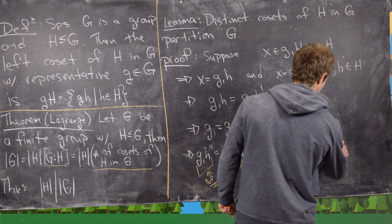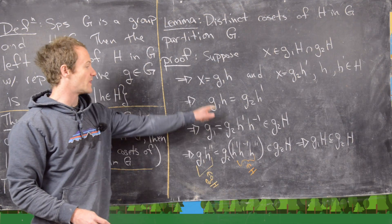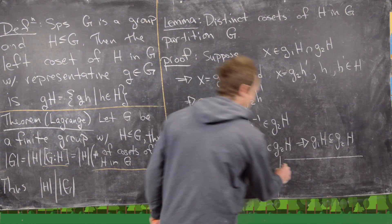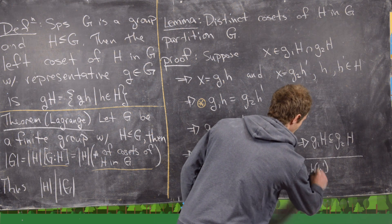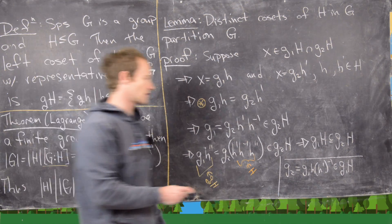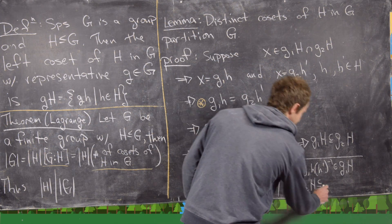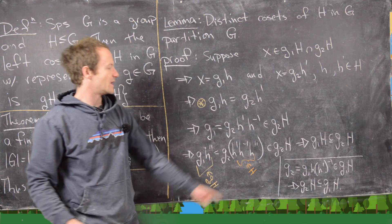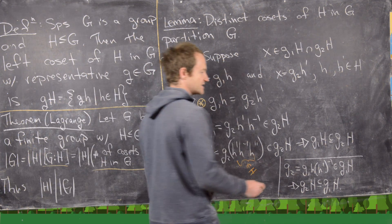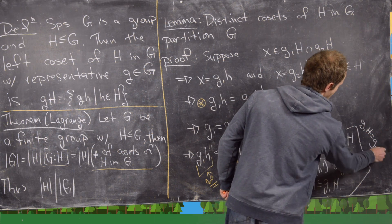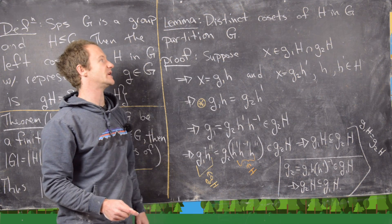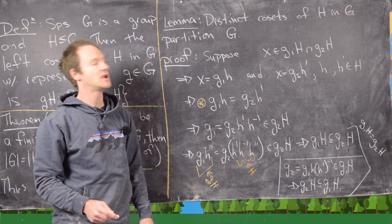Going back to the same equation, we can also write g₂ = g₁·h·h′⁻¹, which is an element of g₁H. A very similar calculation then gives that g₂H is a subset of g₁H. Since g₁H ⊆ g₂H and g₂H ⊆ g₁H, we conclude g₁H = g₂H. So if two cosets overlap at all, they must be equal.